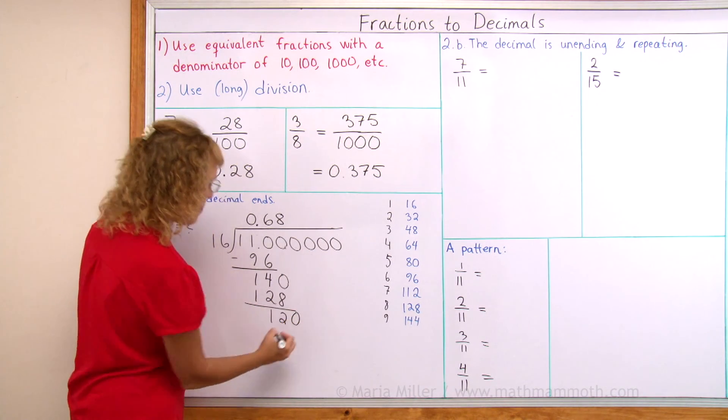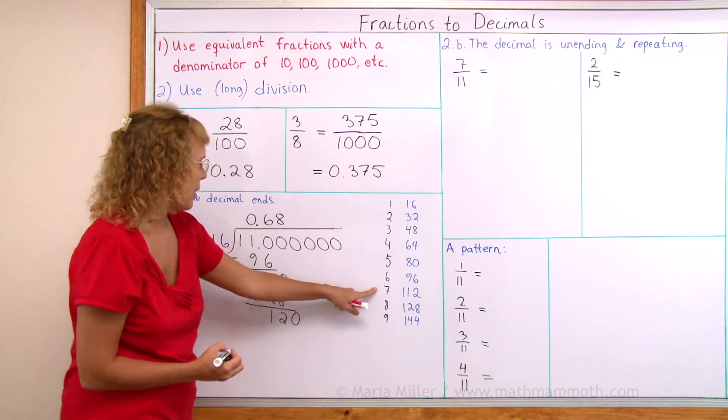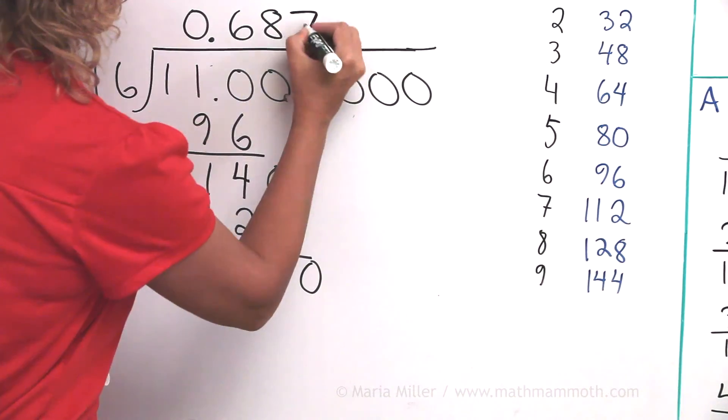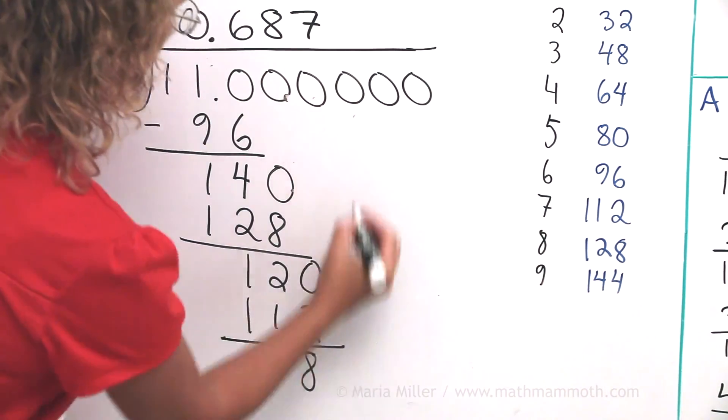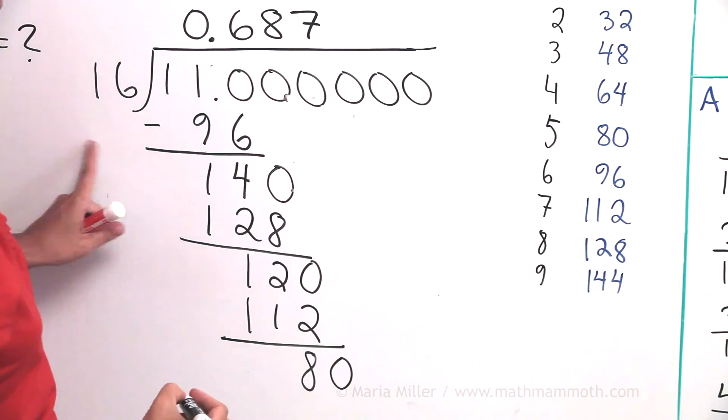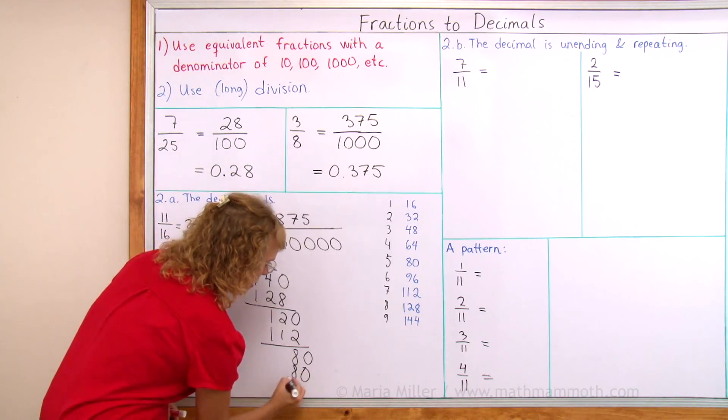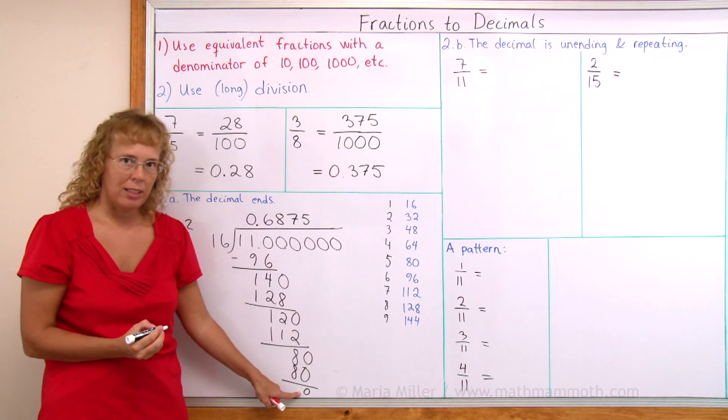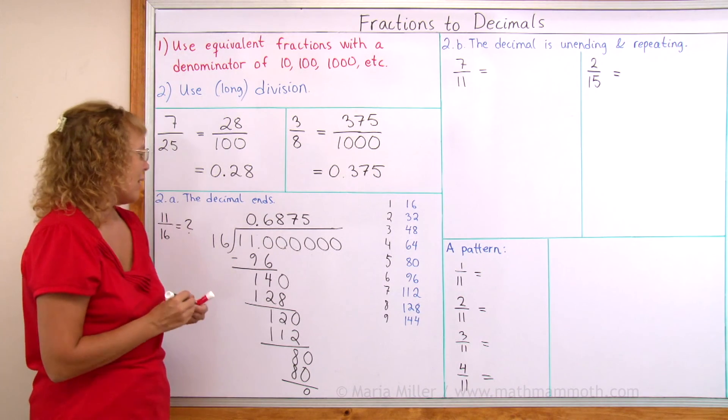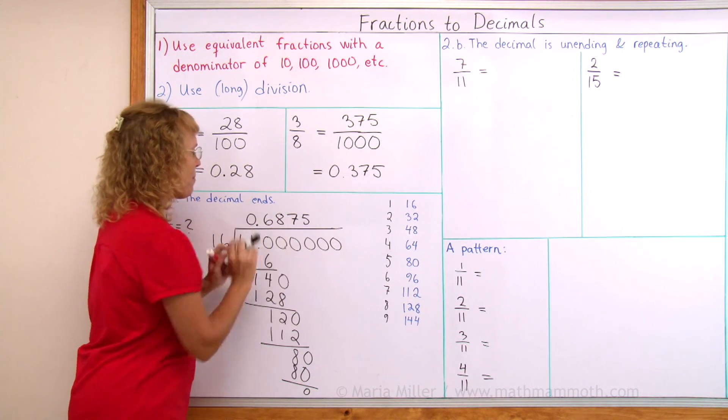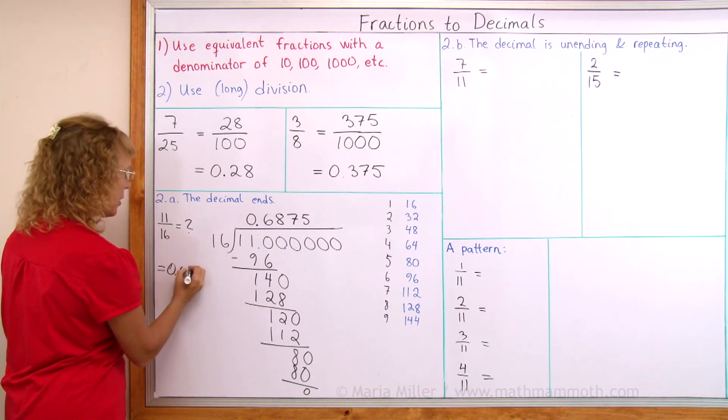Drop zero. How many times does 16 go into 140? Eight times. Eight times 16 is 128. Subtract, and we get 12. Drop a zero. 16 goes into 120 seven times, and we get 112. Subtract, eight, drop another zero. Now it goes evenly, five times. I get zero as a remainder. So my division ends right here. This is my answer, 0.6875.